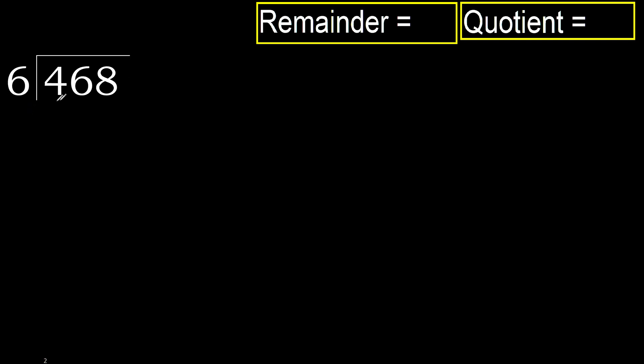468 divided by 6. 4 is less than 6, therefore move to next digits. 46 is not less than 6, therefore with 46: 6 multiplied by which number is nearest to 46 but not greater?